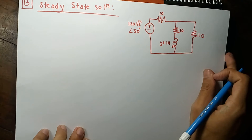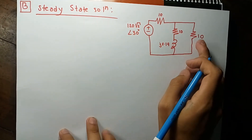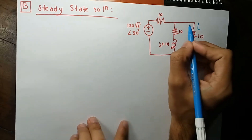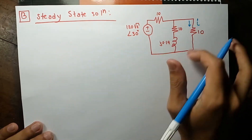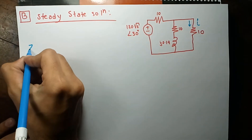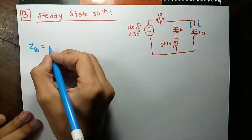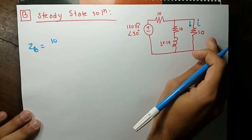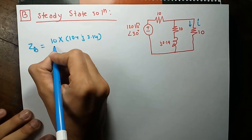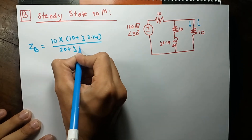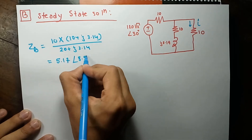Now we have to find the steady-state solution, that means after switching we do phasor analysis to find the current through this branch. I will first find out the impedance in this branch. All quantities are converted into phasor domain, and the impedance of this branch will be 10 times (10 plus j3.14) divided by (20 plus j3.14), which gives 5.17 at an angle of 8.5 degrees.